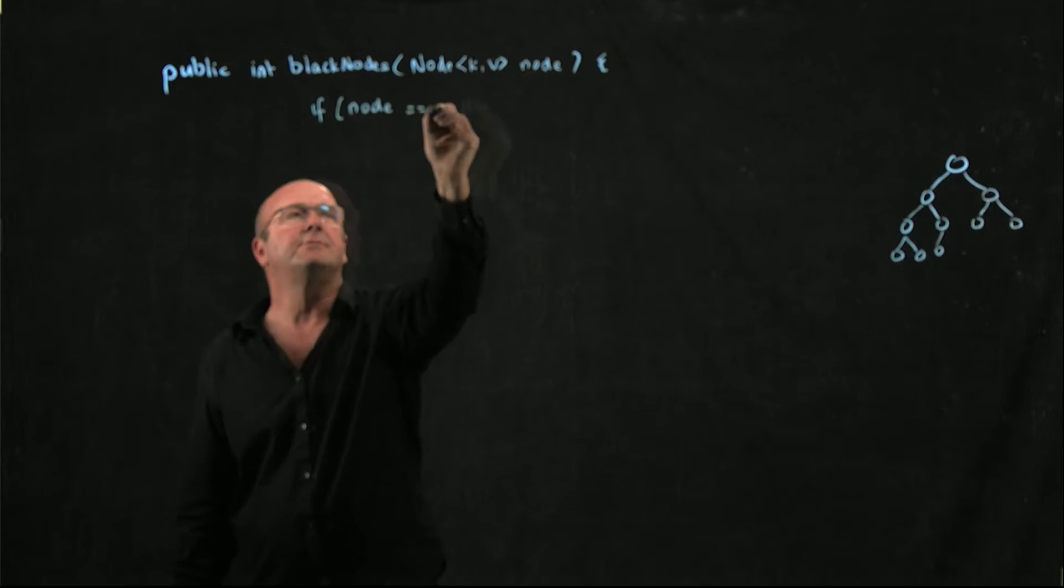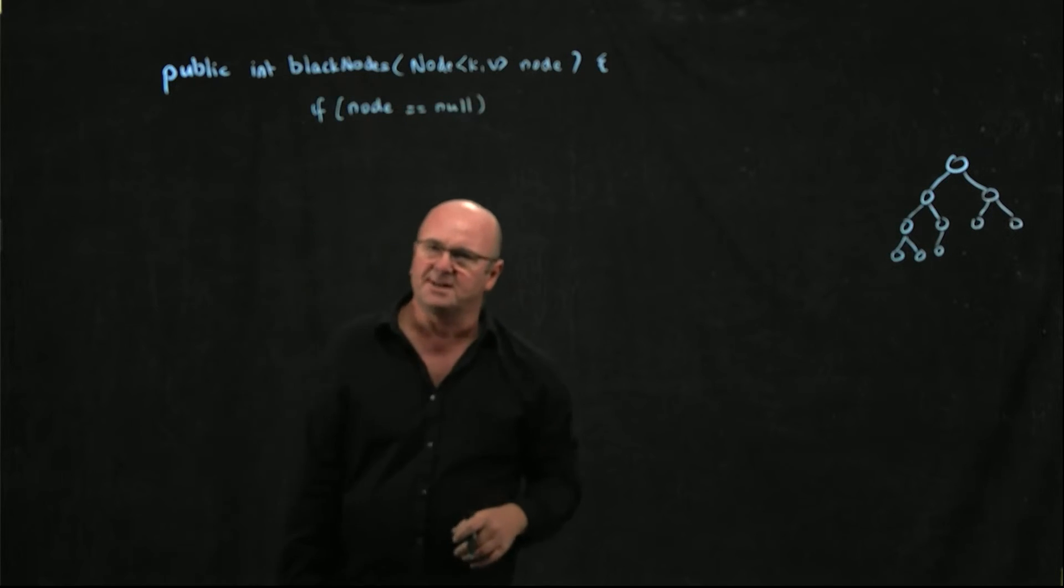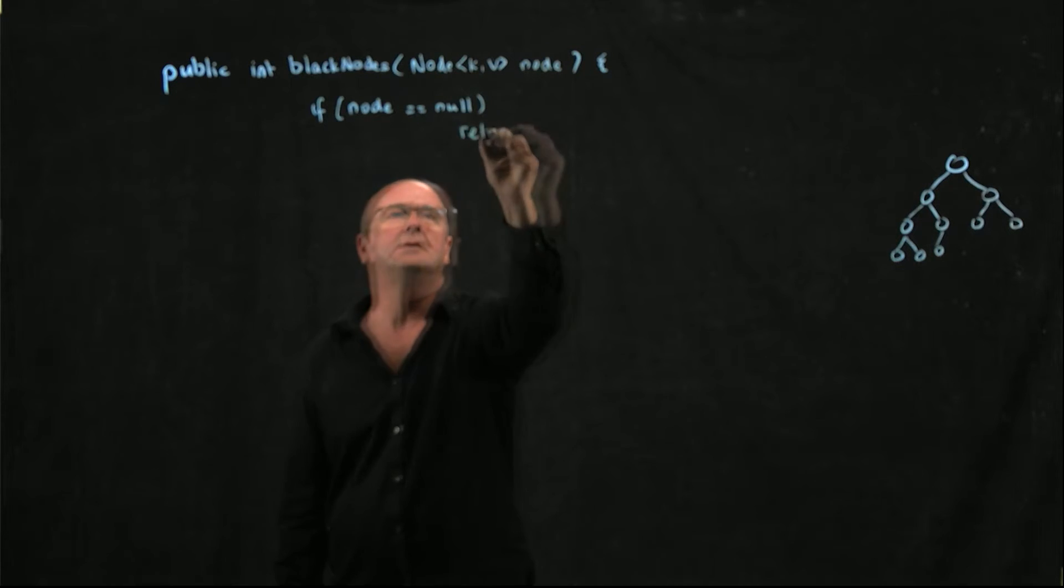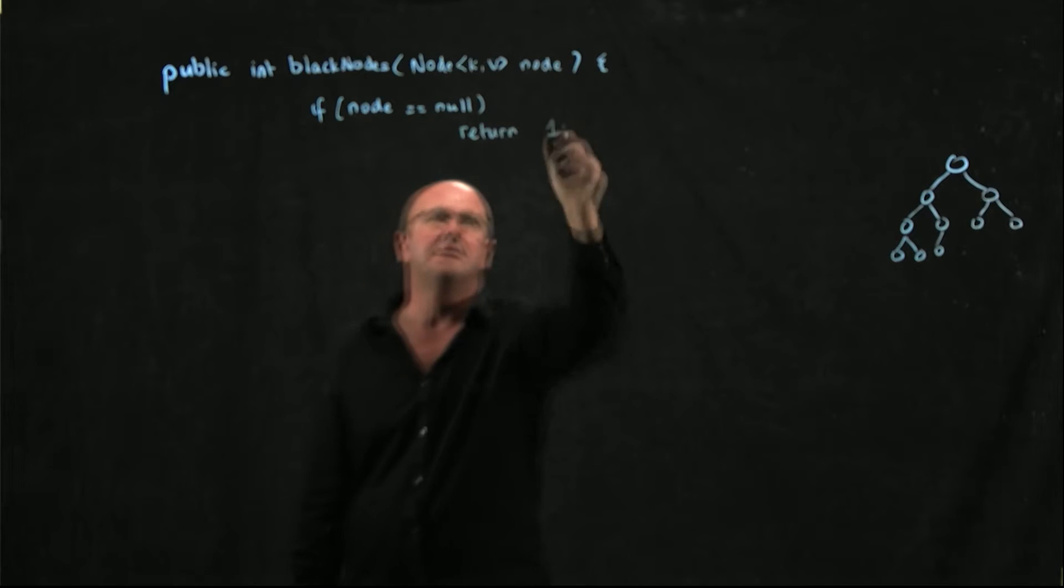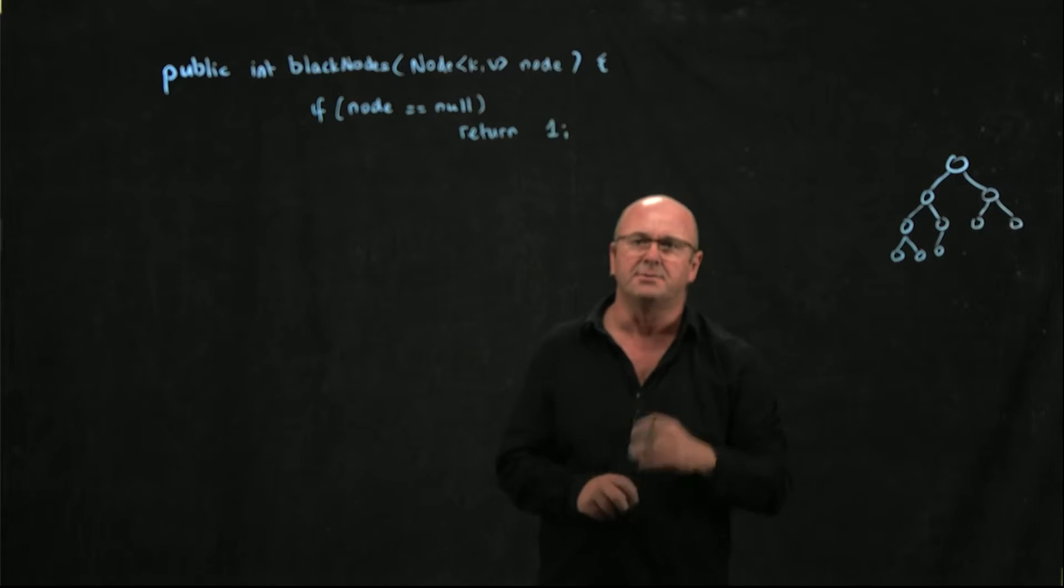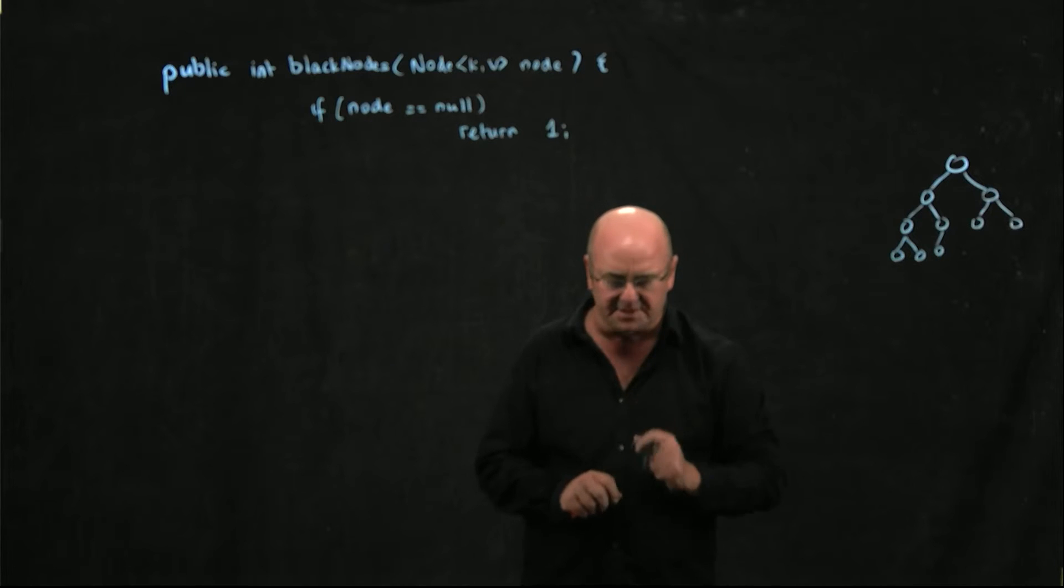Remember one of the rules of red black trees is that null nodes are black. So if we have a null node we don't need to go left or right because there's nothing else to do. But we know that it's a black node so we just return one.